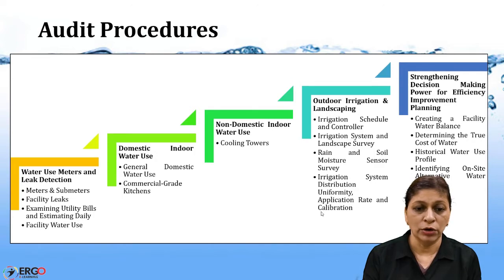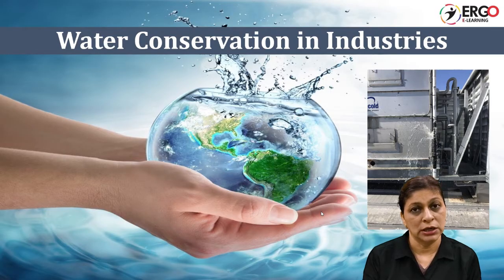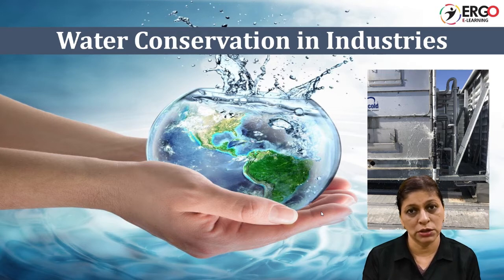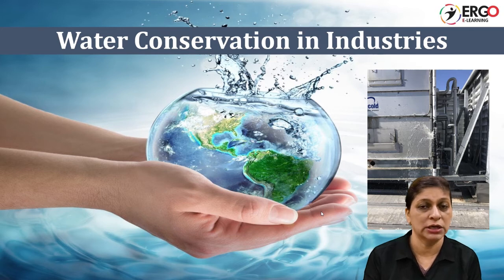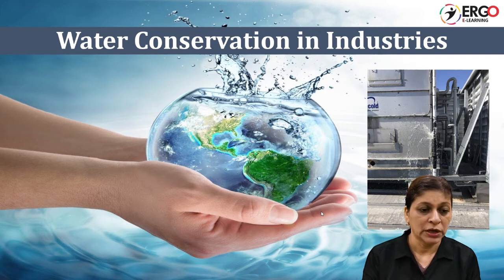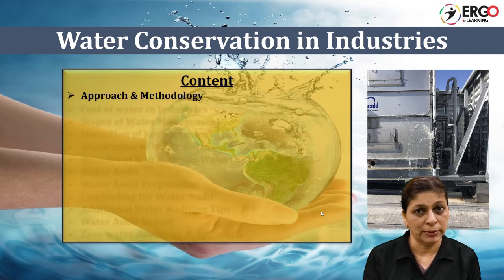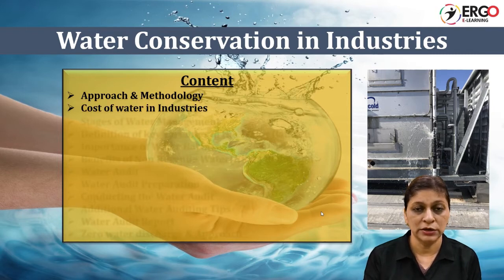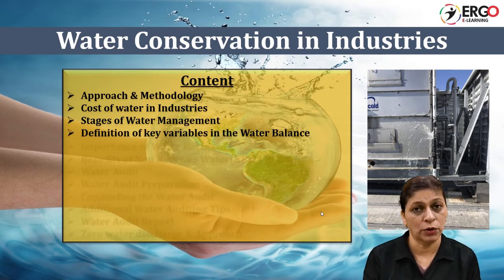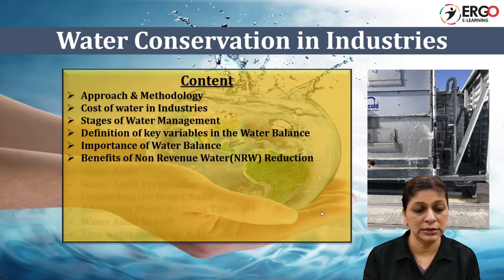The second module is about water conservation in industry. Industry is guzzling water very largely, so where water is used in industry and how that consumption can be monitored as well as optimized is the motive of this second module. It talks about different approaches and methodology applied to industry, how to calculate the cost of water in industry, different stages of water management, and as part of water audit, a very important aspect: water balance — what it is and how to make it.